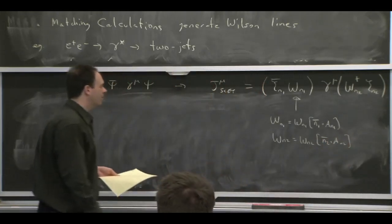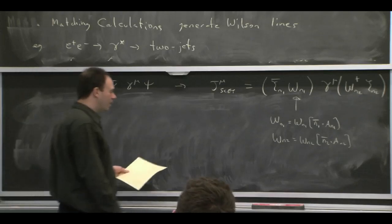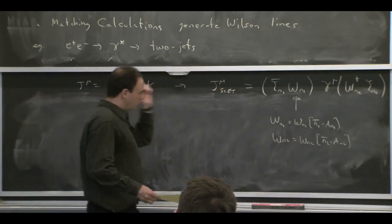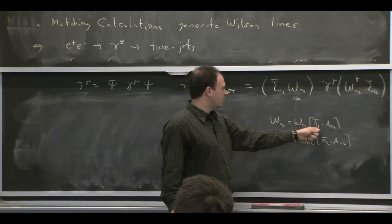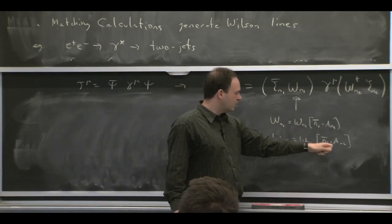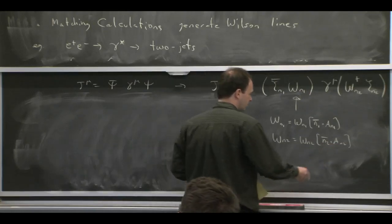So this n1 Wilson line, W n1, my notation here is that the subscript is supposed to indicate to you that it's n1 bar dot a n1 that shows up. And then likewise, W n2 is a function of n2 bar dot a n2. So you have to decide whether you're going to call it W sub n2 bar or n2. But anyway, this is my notation.